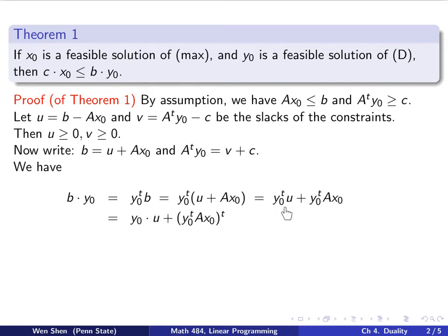So we're going to write the first here as y0 dot u. And this second term here, since it's just a number, I can transpose it and I still get the same number. So I do a transpose on that. That's our little trick.